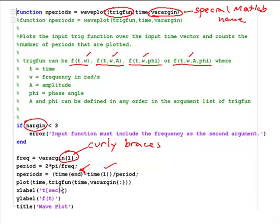Next, we're going to plot the function, and here we're just going to call trigfun, which is the function that was passed to waveplot, with the input variable time, which is the time vector input to this function, and varargin. Now, varargin is going to have a variable number of elements, and that's what this colon allows for.